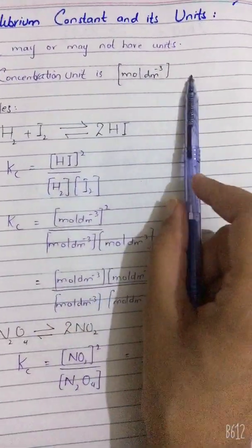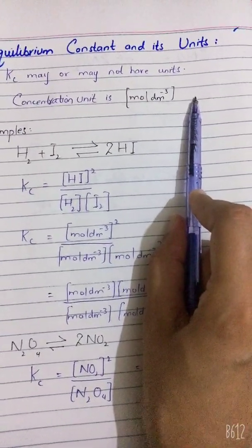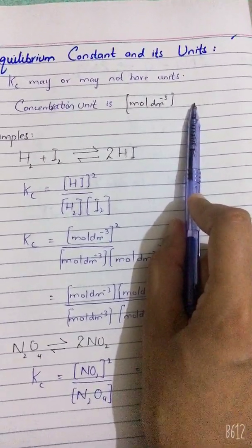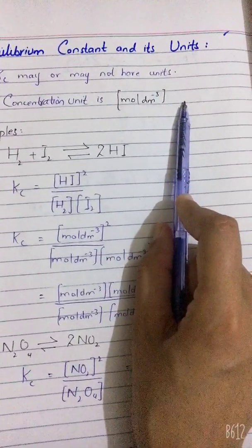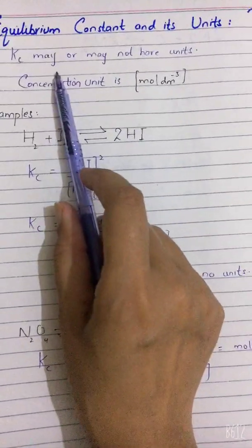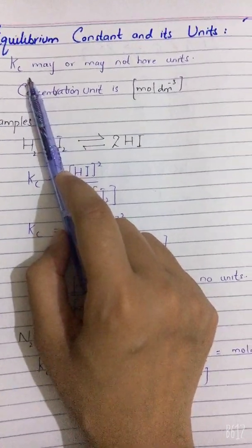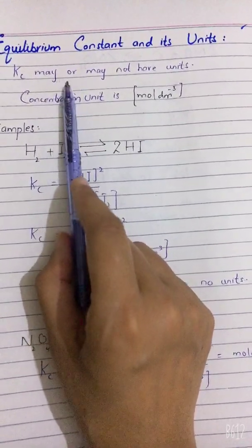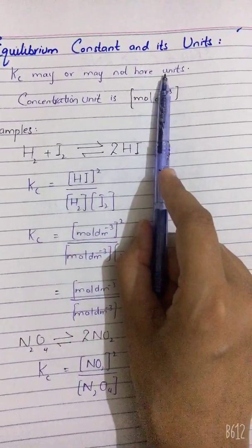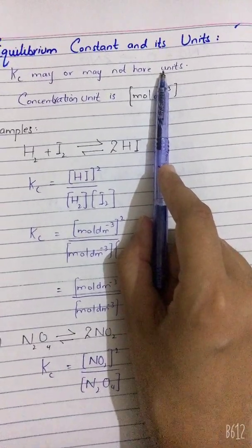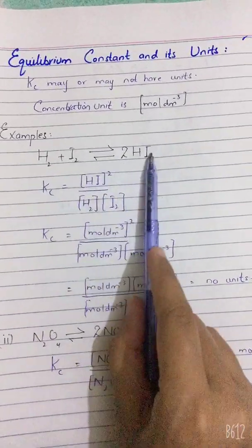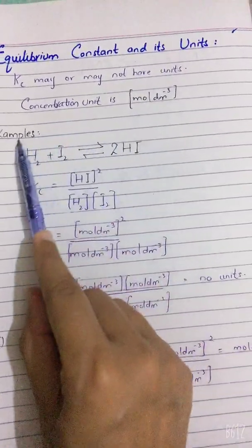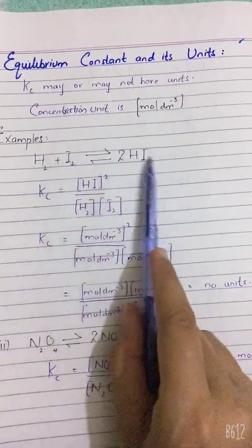Next, we move towards the equilibrium constant and its units. From the law of mass action, we derived Kc, and we noted that the equilibrium constant equals the concentration of the products divided by the concentration of the reactants. The unit of Kc may or may not exist — sometimes it has no unit, sometimes it is mol per dm³, and sometimes it may be mol² dm⁻⁶. It depends upon the reaction — how many moles of reactants and products are present.